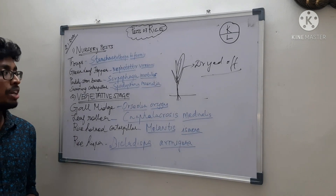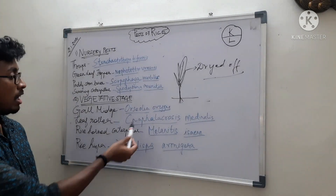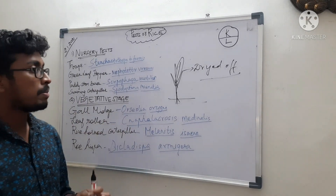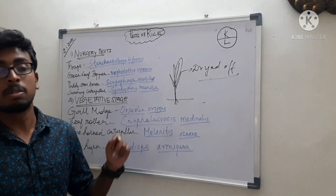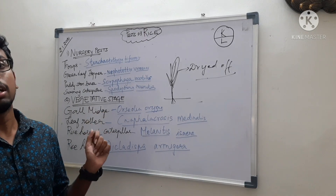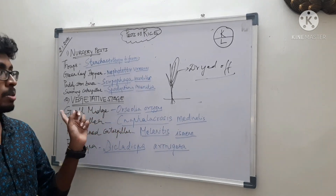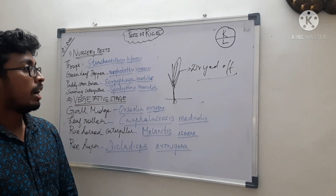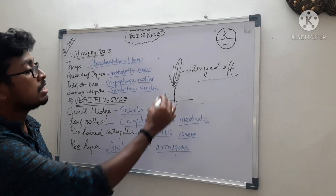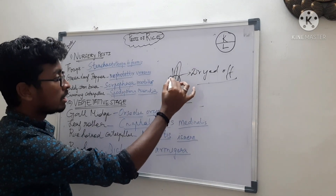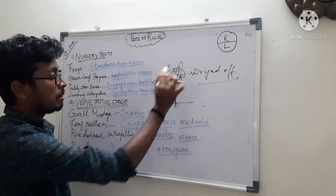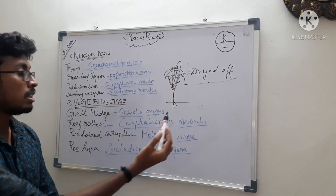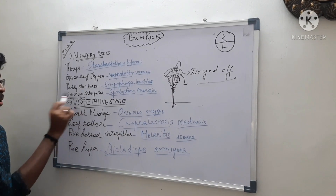The swarming caterpillar is also present in both the main field and nursery. The main symptom is a cattle-grazed appearance — it looks like cattle have grazed the field. This is an important symptom caused by Spodoptera mauritia. It generally eats all the leaf tips and then swarms from one field to another, which is why it is called a swarming caterpillar.